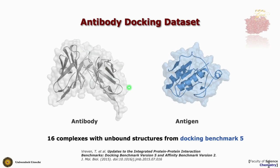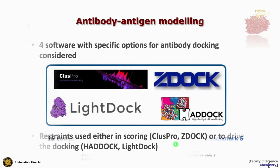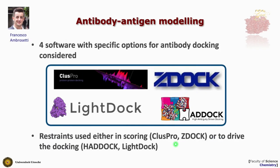To benchmark how well this information can guide the modeling process, we used a small dataset of 16 complexes extracted from the docking benchmark 5, which is a reference in the field for measuring how well a method predicts complexes. We tested four software packages that are simple to use, some available as web portals, and all have specific options to deal with antibodies.